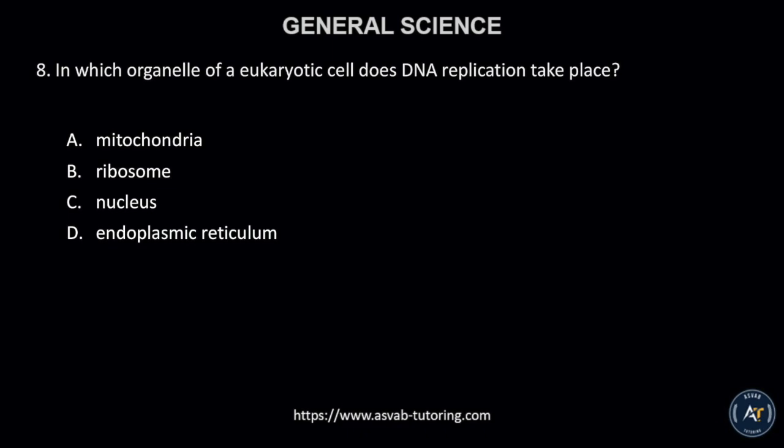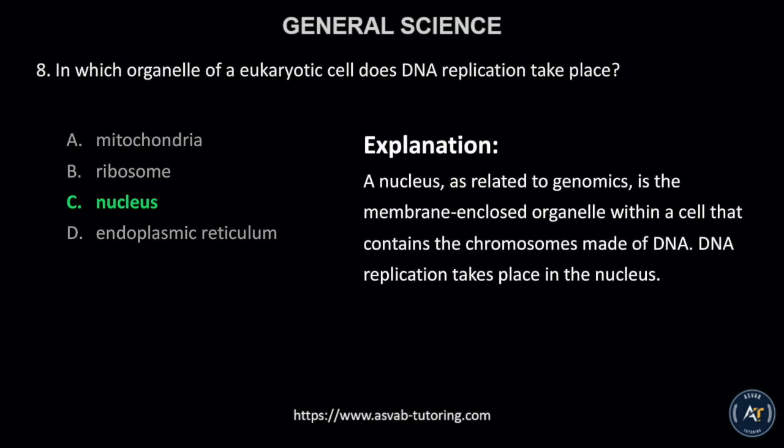Number 8. In which organelle of a eukaryotic cell does DNA replication take place? A. mitochondria, B. ribosome, C. nucleus, or D. endoplasmic reticulum? The correct answer is letter C, nucleus. A nucleus, as related to genomics, is the membrane-enclosed organelle within a cell that contains the chromosomes made of DNA. DNA replication takes place in the nucleus.